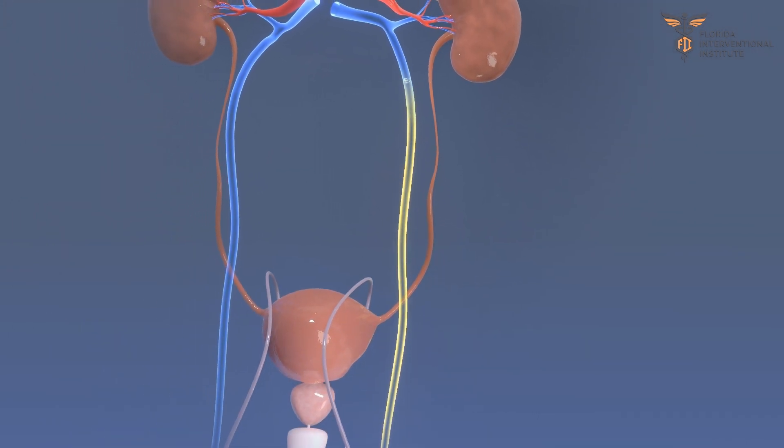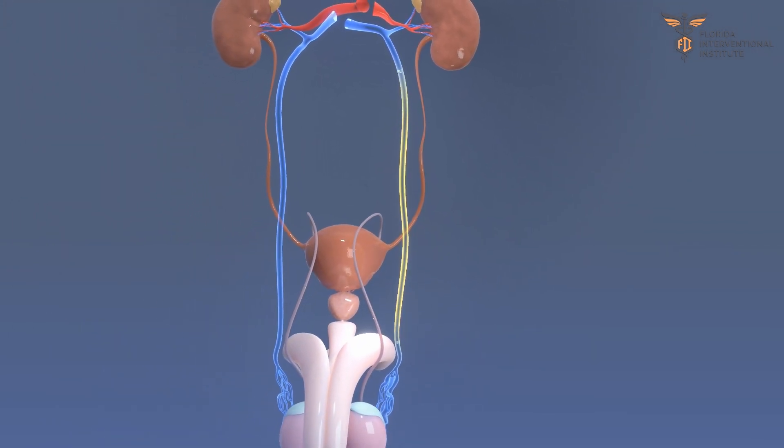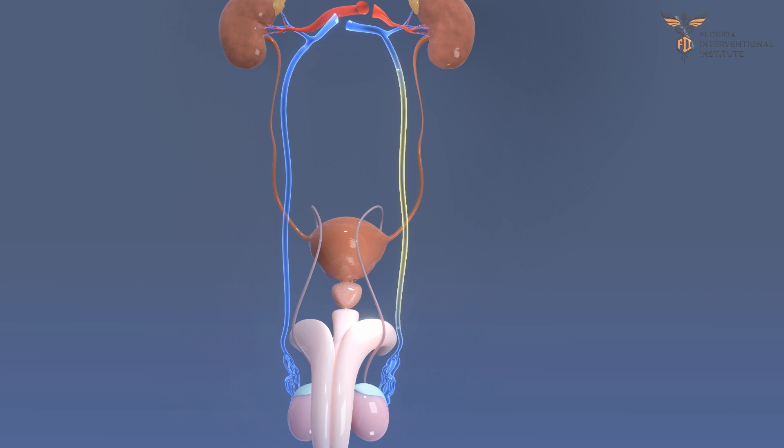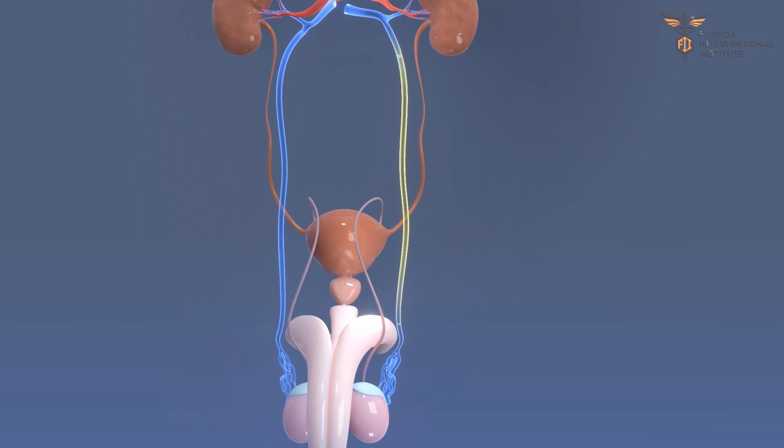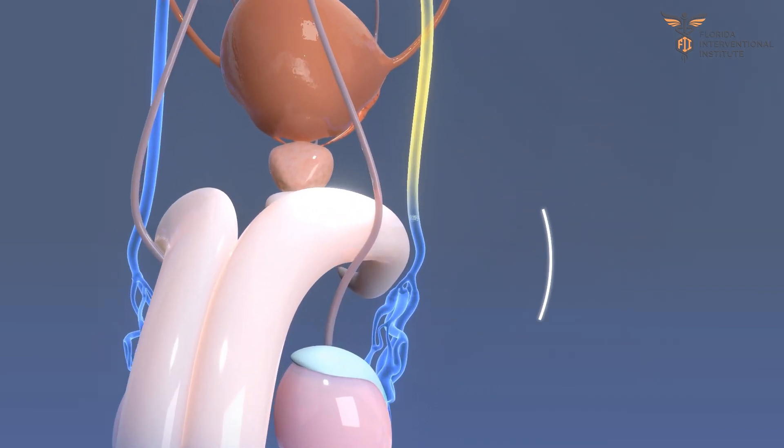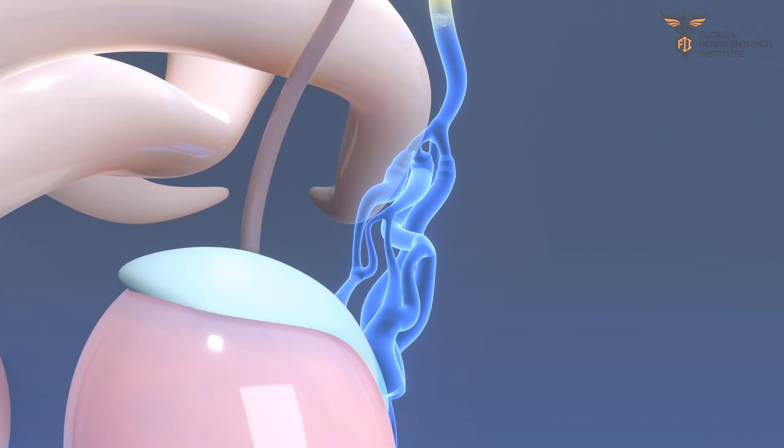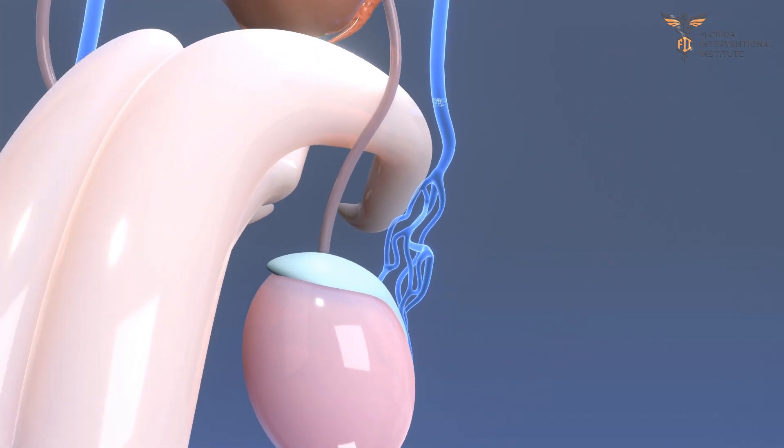This technique effectively blocks a segment of the gonadal vein and prevents any reversed flow of blood towards the testicle. With no blood flowing under pressure towards the testicles, the varicocele shrinks and gets back to their normal size.